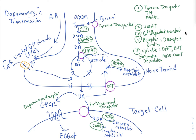To terminate dopaminergic signaling, dopamine must be removed from the junction. Unlike acetylcholine, which is metabolized in the junction, dopamine is taken back up through the dopamine reuptake transporter, DAT, into the nerve terminal where it can be metabolized into an inactive metabolite by monoamine oxidase, MAO. Dopamine can also be recycled back through VMAT into the vesicle.